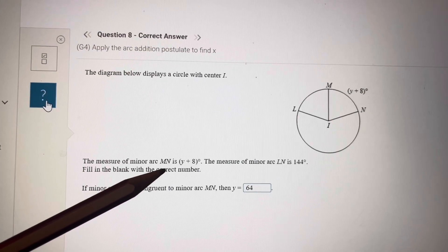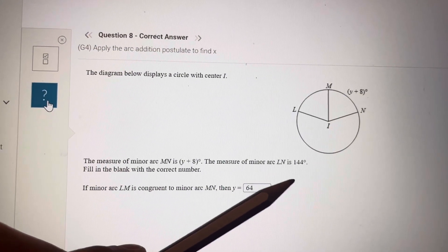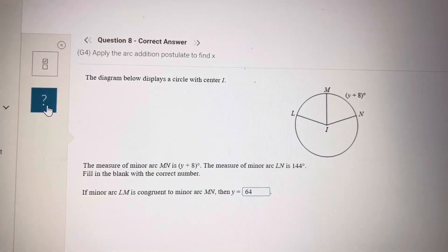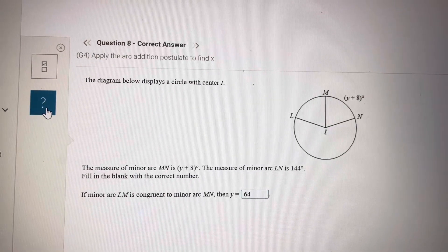The measure of minor arc MN is Y plus 8. The measure of minor arc LN is 144. So LN, this all is 144. MN, this one, is Y plus 8. Fill in the blank.